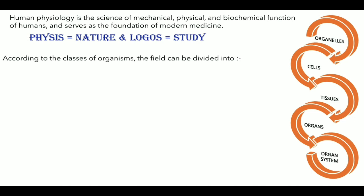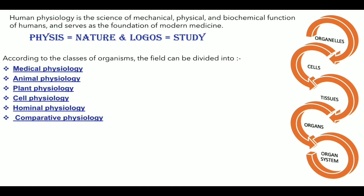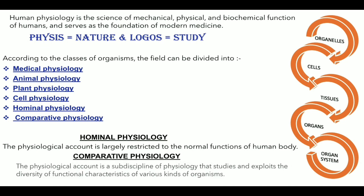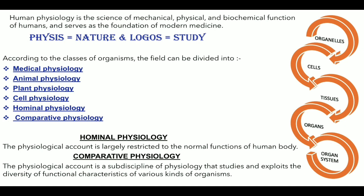On the basis of classes of organisms, physiology is divided into different fields: medical physiology, in which we study the function of internal organs; animal physiology, in which we study the mechanical, physical, and biochemical processes of living organisms; plant physiology, in which we study fundamental processes in plants; cell physiology, in which we study the biological activities that take place in a cell to keep it alive; hormonal physiology, largely restricted to normal functions of the human body; and comparative physiology, a sub-discipline that studies and exploits the diversity of functional characteristics of various organisms.